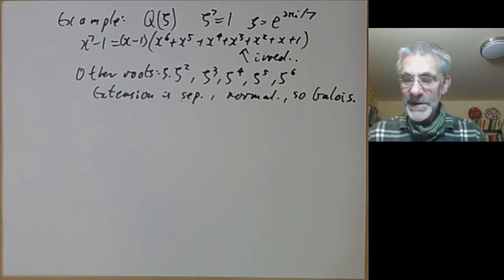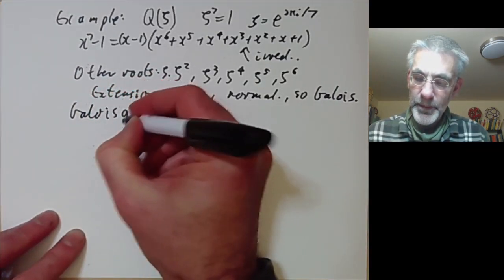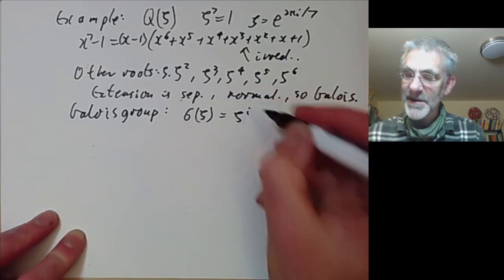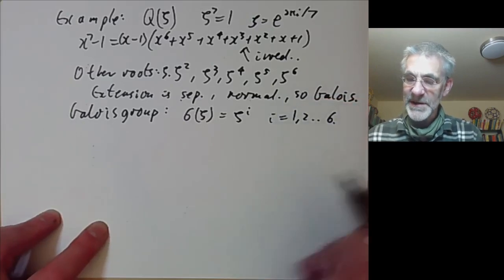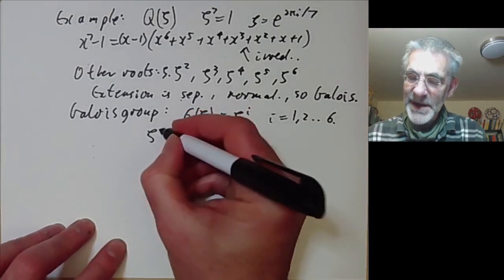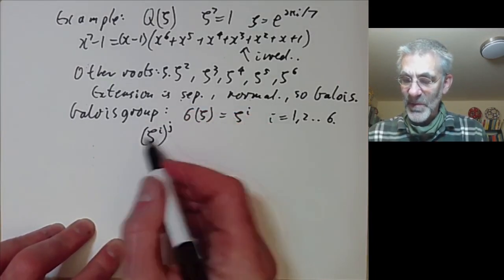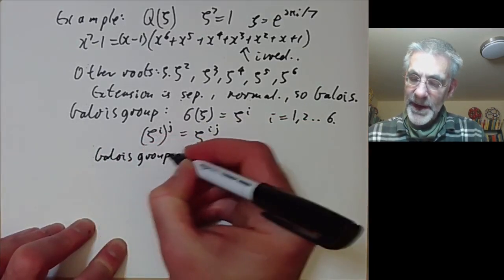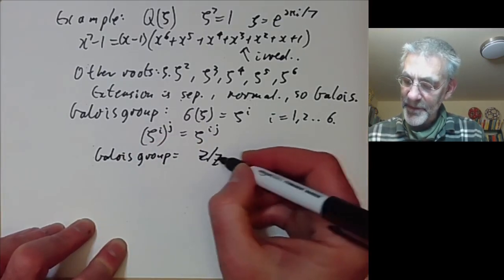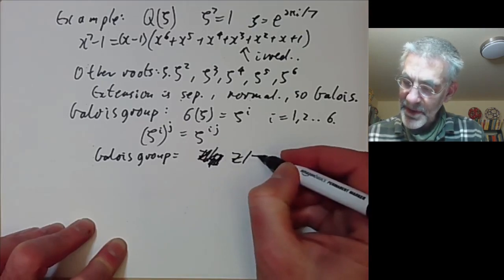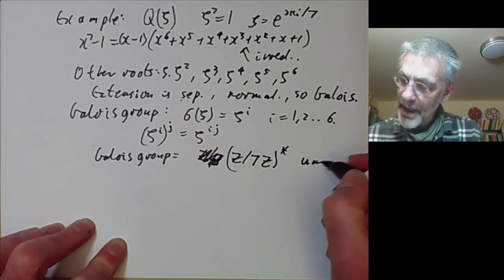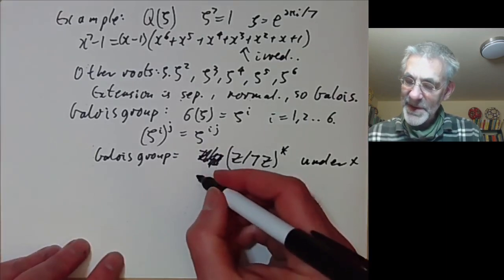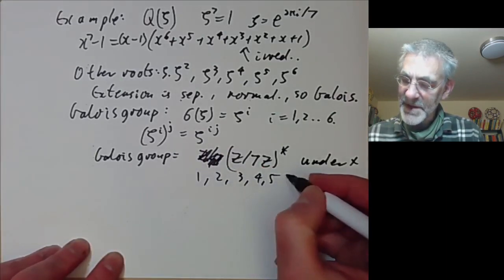What is the Galois group? Any automorphism must take ζ to ζⁱ for i = 1, 2, …, 6. If we apply the automorphism raising to the i-th power and then the j-th power, we get ζ^(ij), so the composition corresponds to multiplication. Thus the Galois group is just the nonzero integers mod 7 under multiplication, i.e., (ℤ/7ℤ)*, which has six elements {1, 2, 3, 4, 5, 6} and is cyclic of order 6.